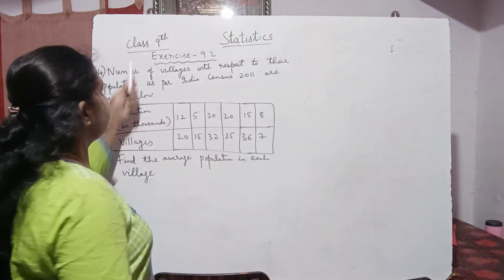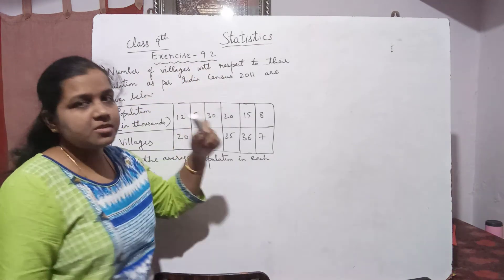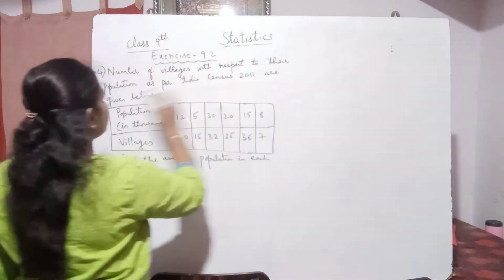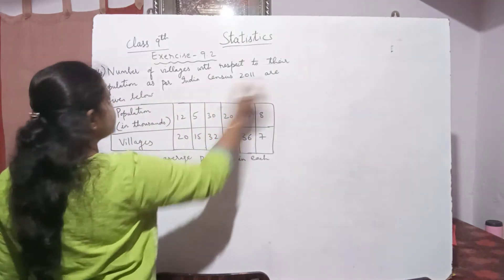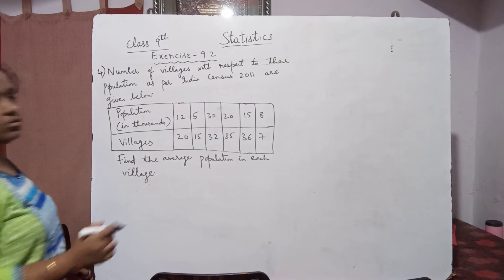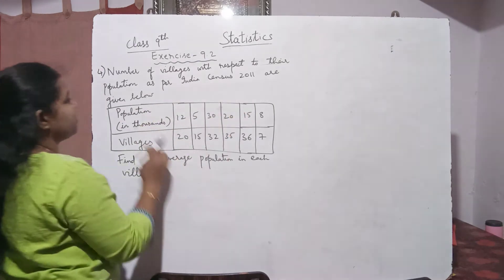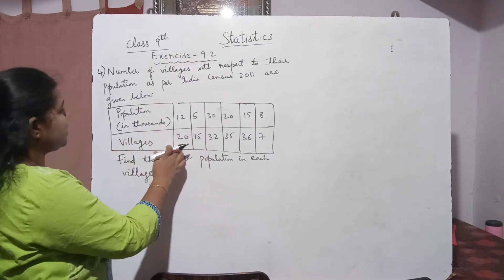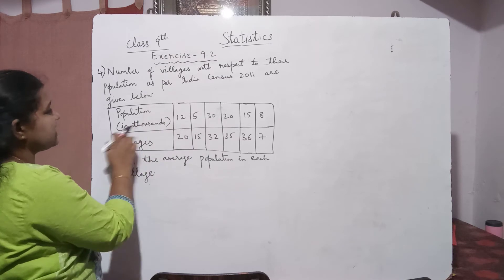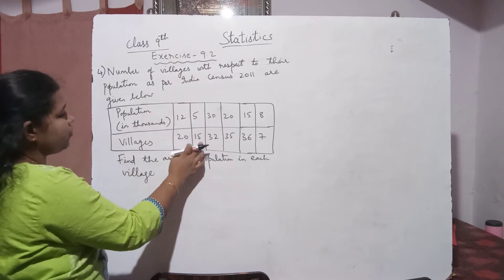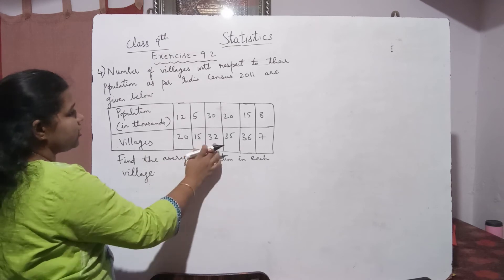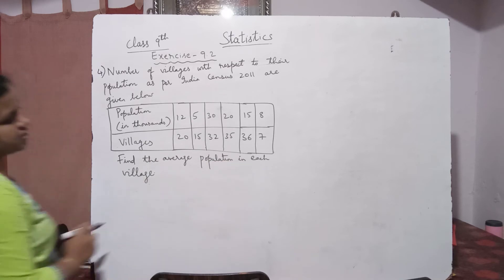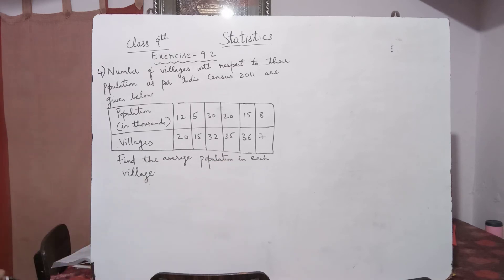In 9th class mathematics, under the chapter Statistics, Exercise 9.2, this is the fourth problem. The number of villages with respect to their population as per India Census 2011 are given below. For example, 20 villages have a population of 12,000, 15 villages have 5,000, and 32 villages have 30,000. You have to find the average population in each village.